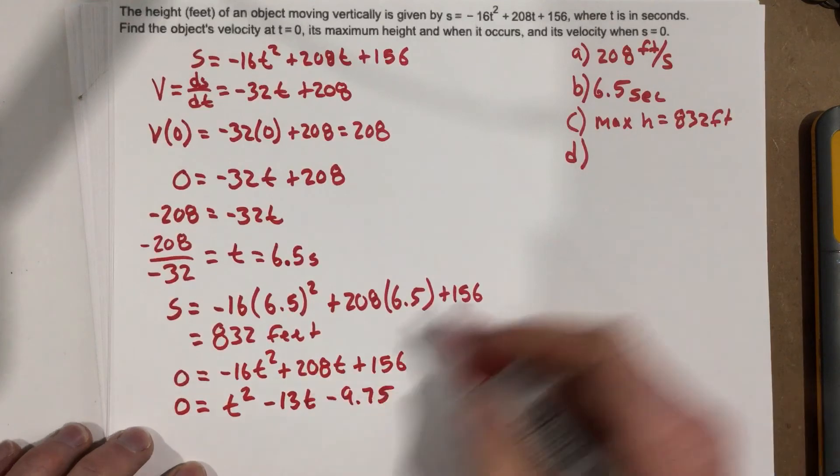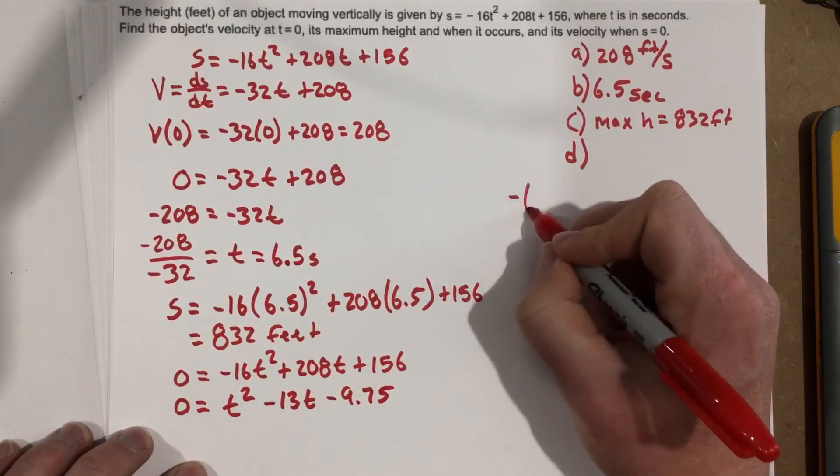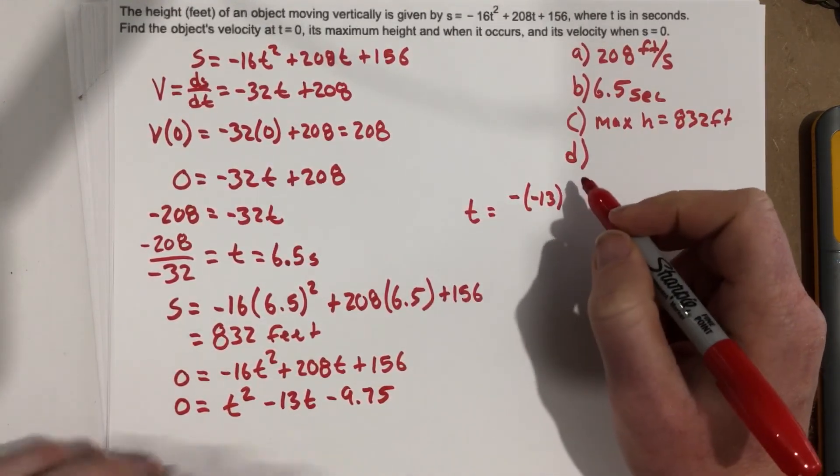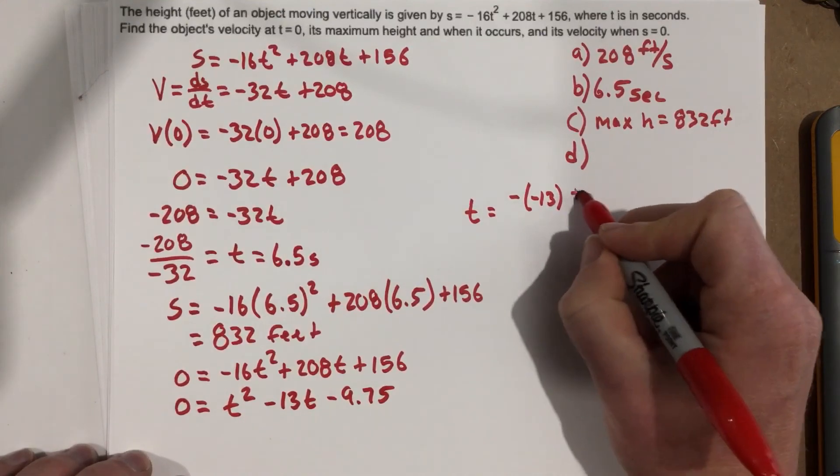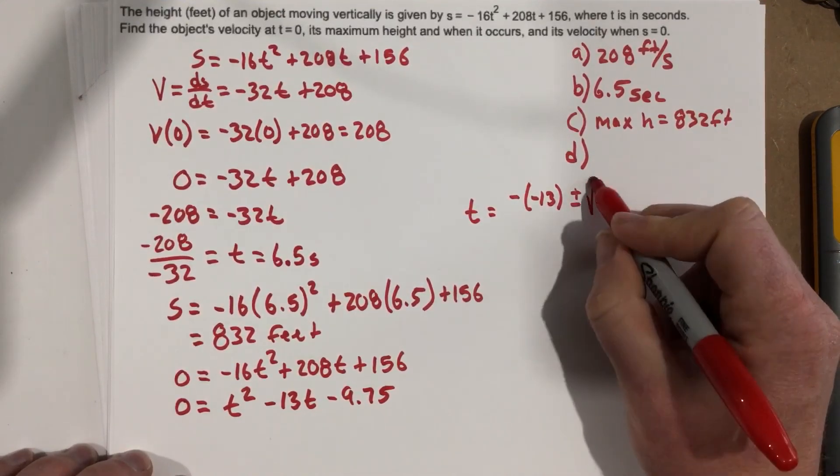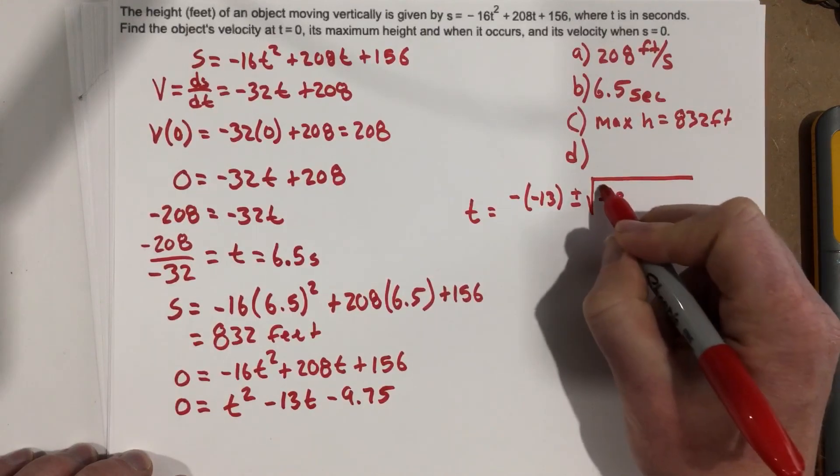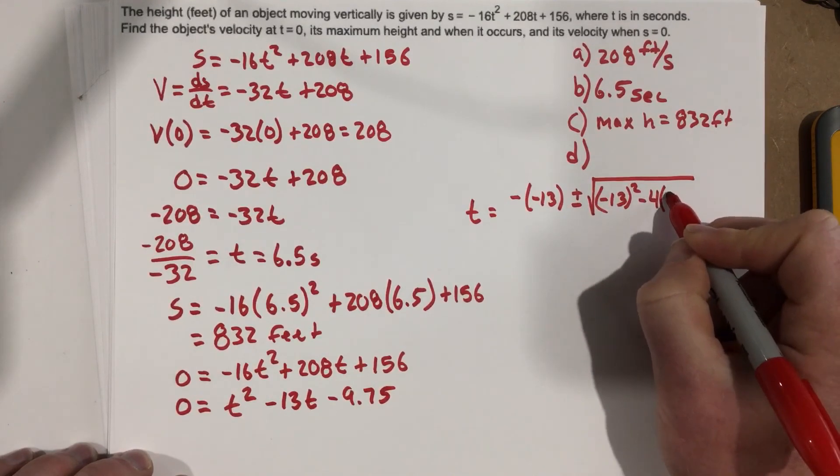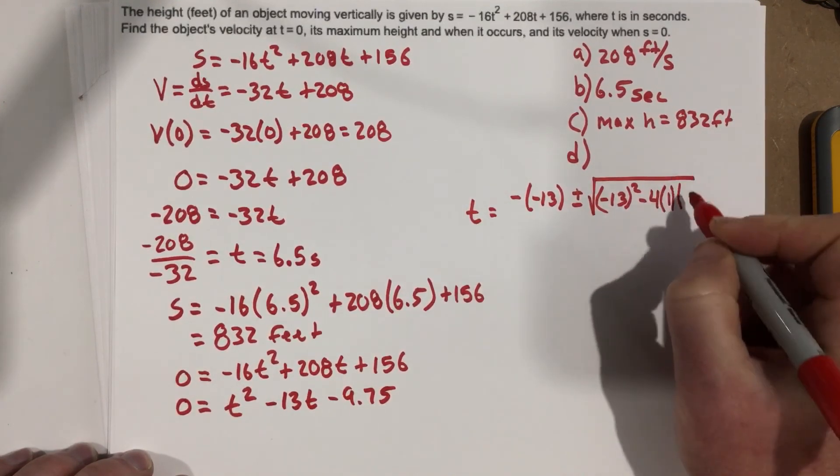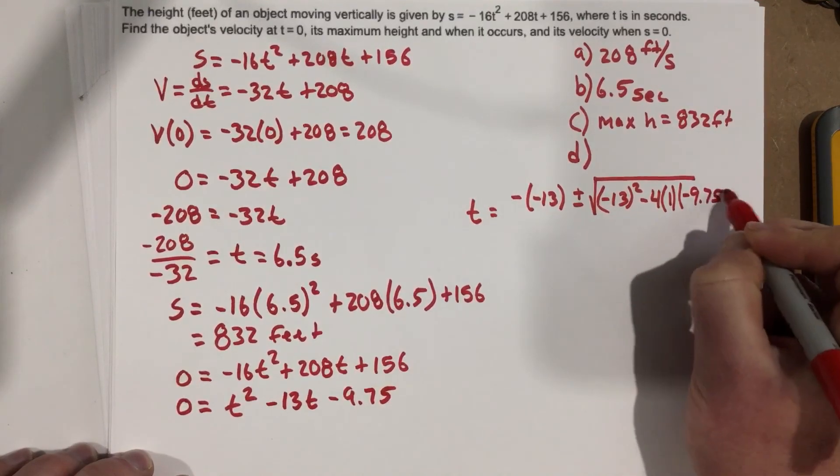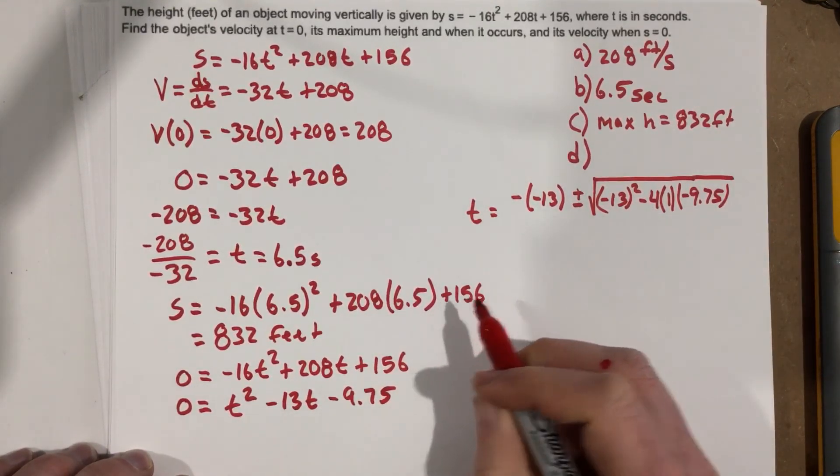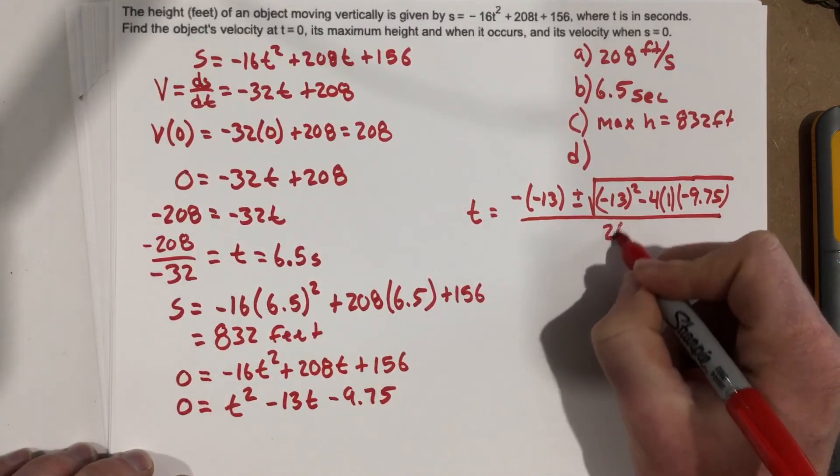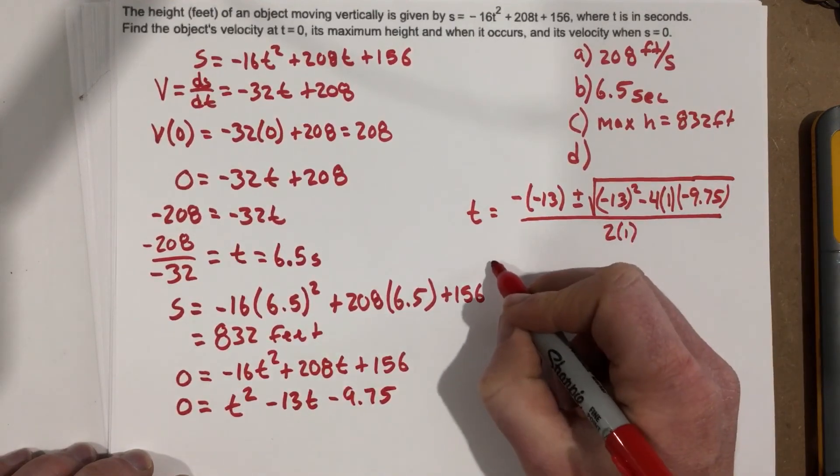Now I'm going to use a quadratic formula. So negative, negative 13. Remember, we're finding t here. So negative, negative 13 plus minus root negative 13 squared minus 4 times a, which is 1, times c, which is negative 9.75. And that's all going to be divided by 2a, which is just 2, so 2 times 1, which we'll see this, just 2 there.